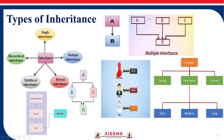Next we have multiple inheritance: more than one base class and one derived class. Then we have multi-level inheritance, which consists of a base class, an intermediate base class, and a derived class.